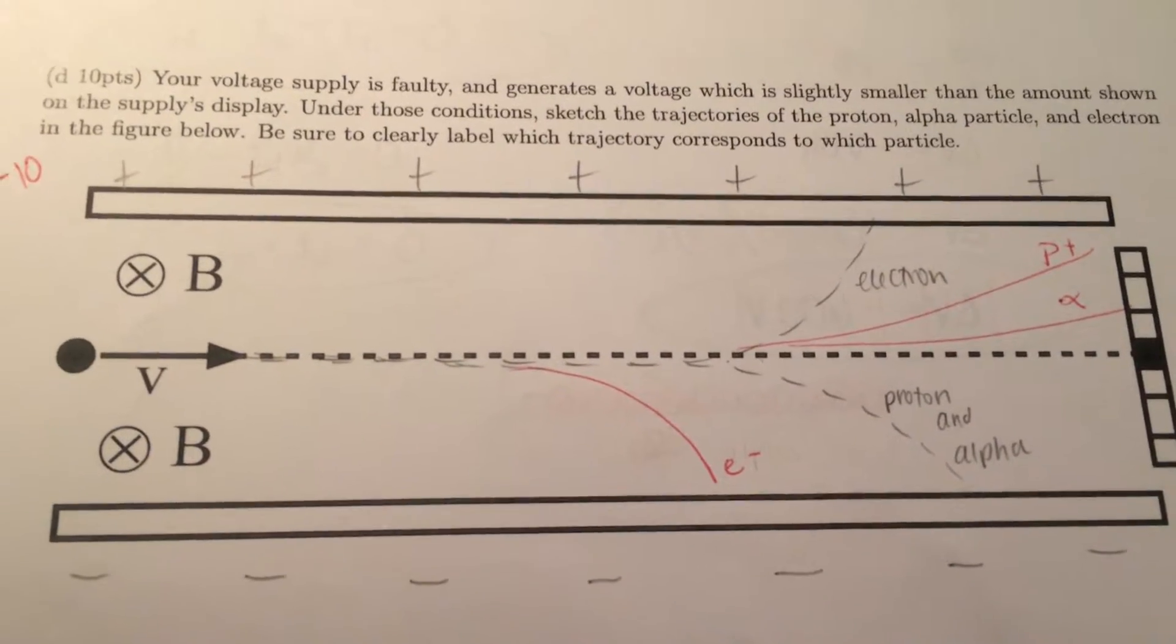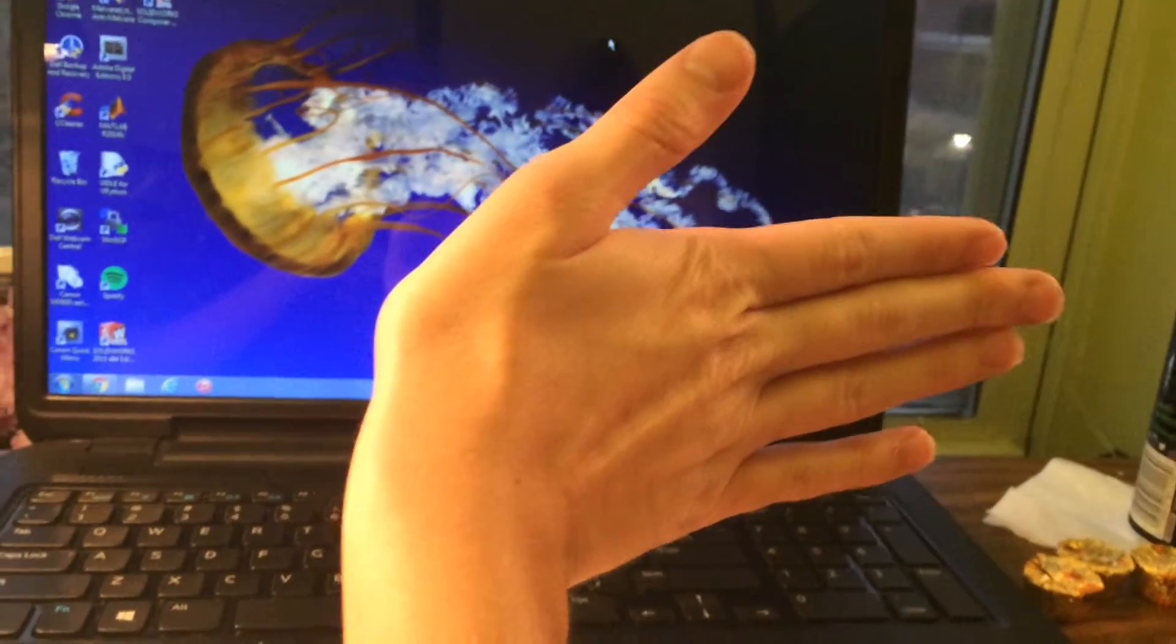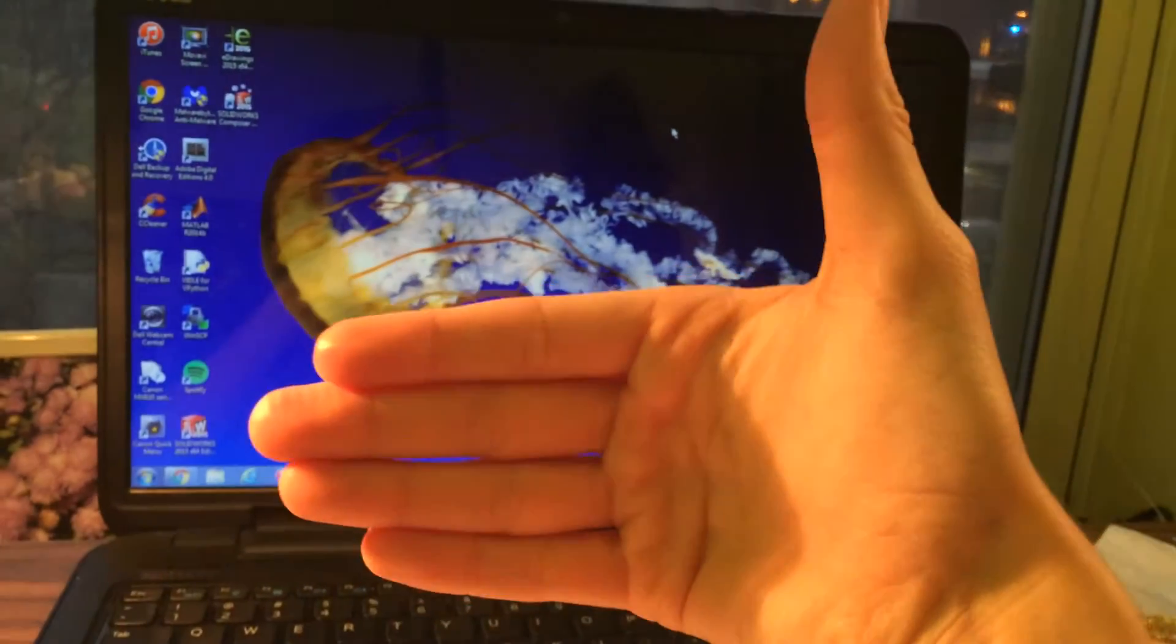And so, you solve for the electron the same way. So, if the particle is an electron, and it's moving to the right, you flip it, because there's a negative charge.